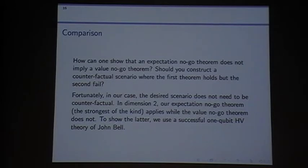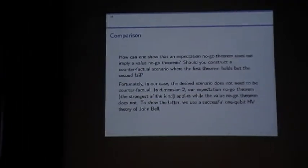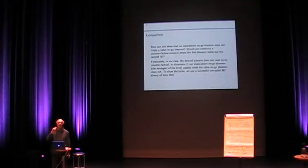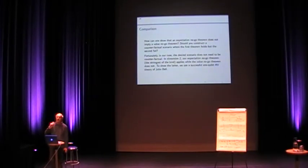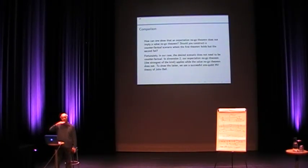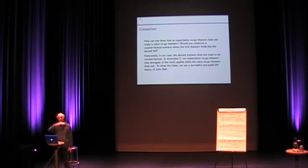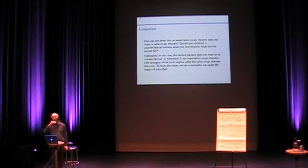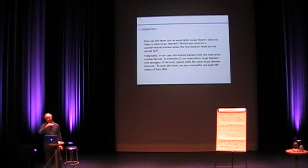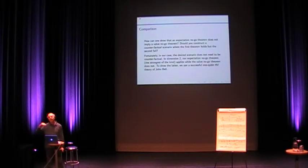Fortunately there is this gap. So in the classical approach the no-go theorem holds starting from dimension three, whereas the expectation approach starts from dimension two.